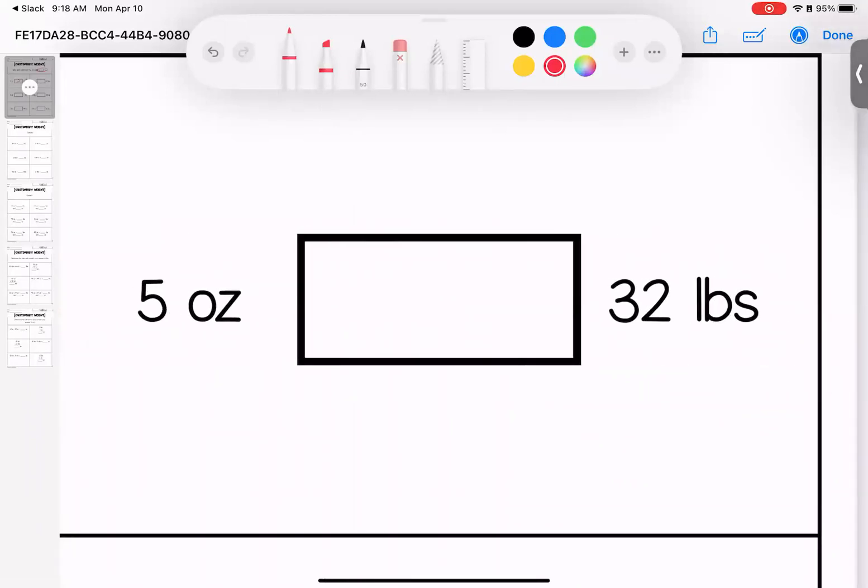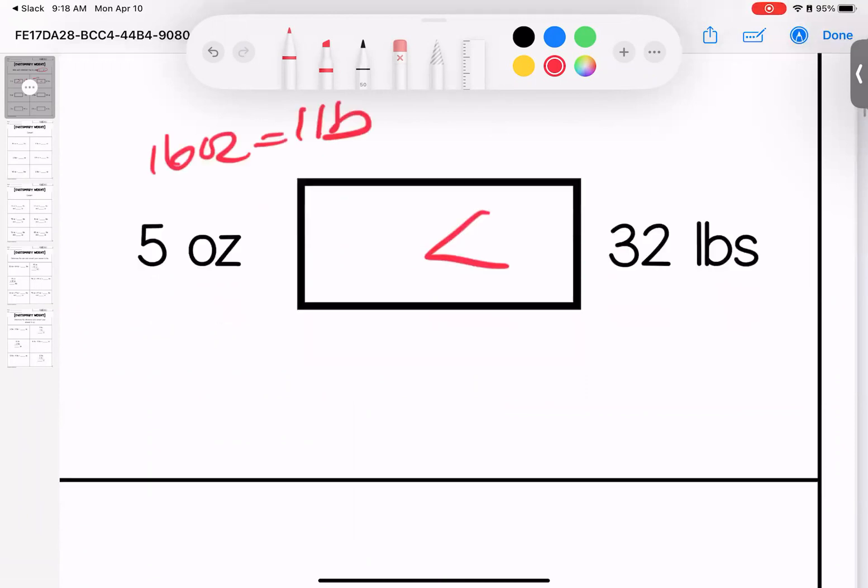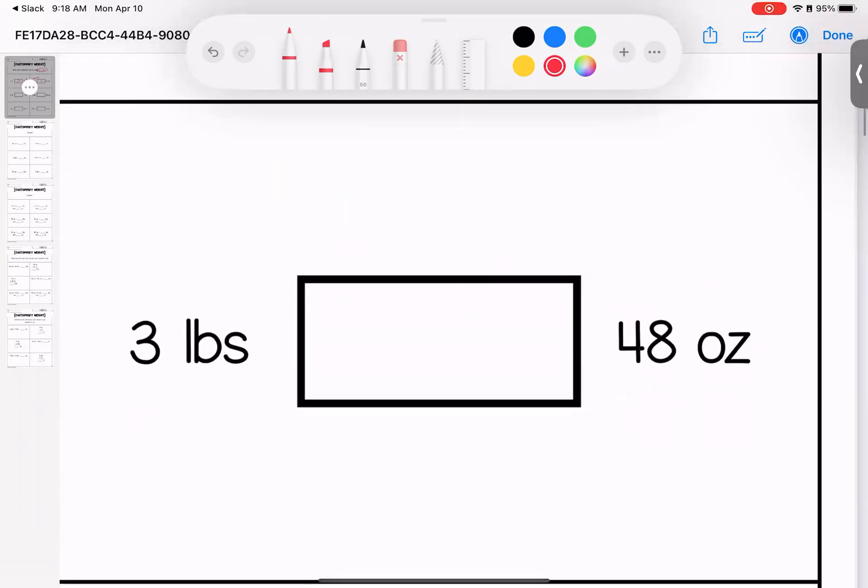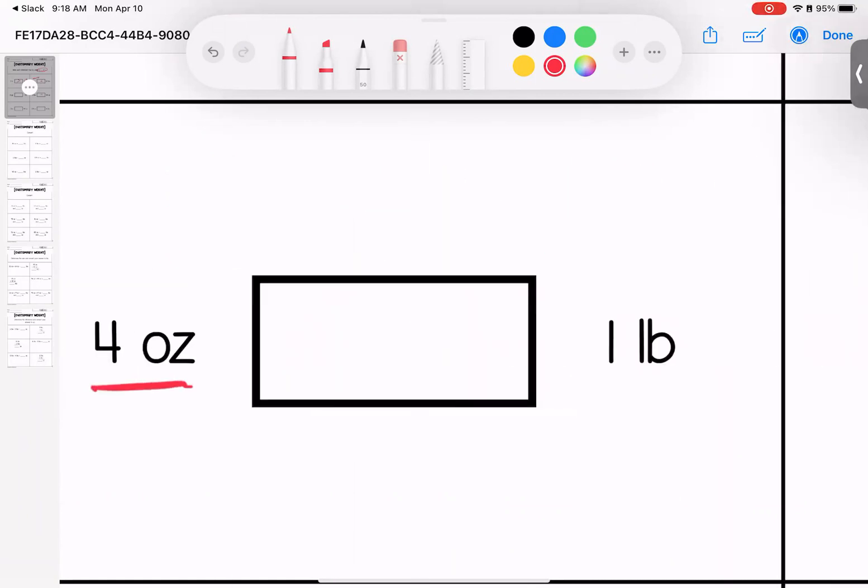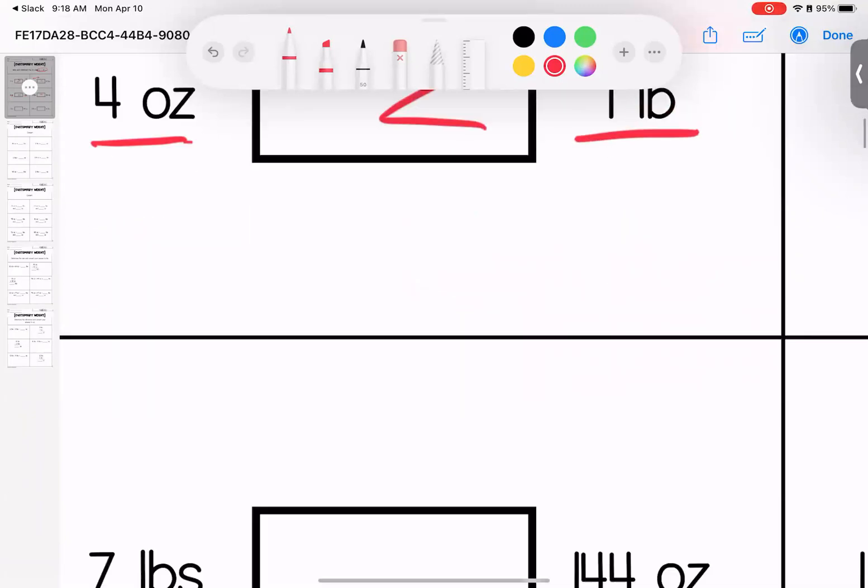Five ounces or 32 pounds. There's 16 ounces in one pound, so 32 pounds is definitely going to be the greater value. This one I had to think it through a little bit. Three pounds are 48 ounces. If I multiply this by 16 because there's 16 ounces in every pound, that gives me 48 ounces. These two are equivalent. Four ounces or one pound, this is 16 ounces. It is the greater amount.